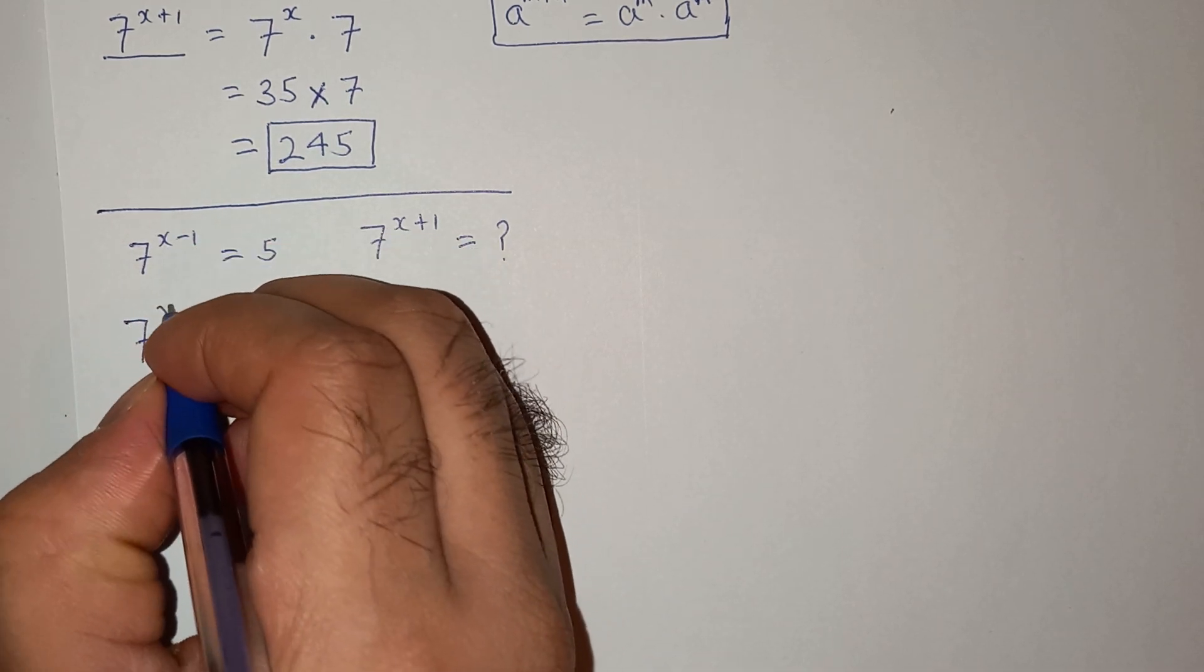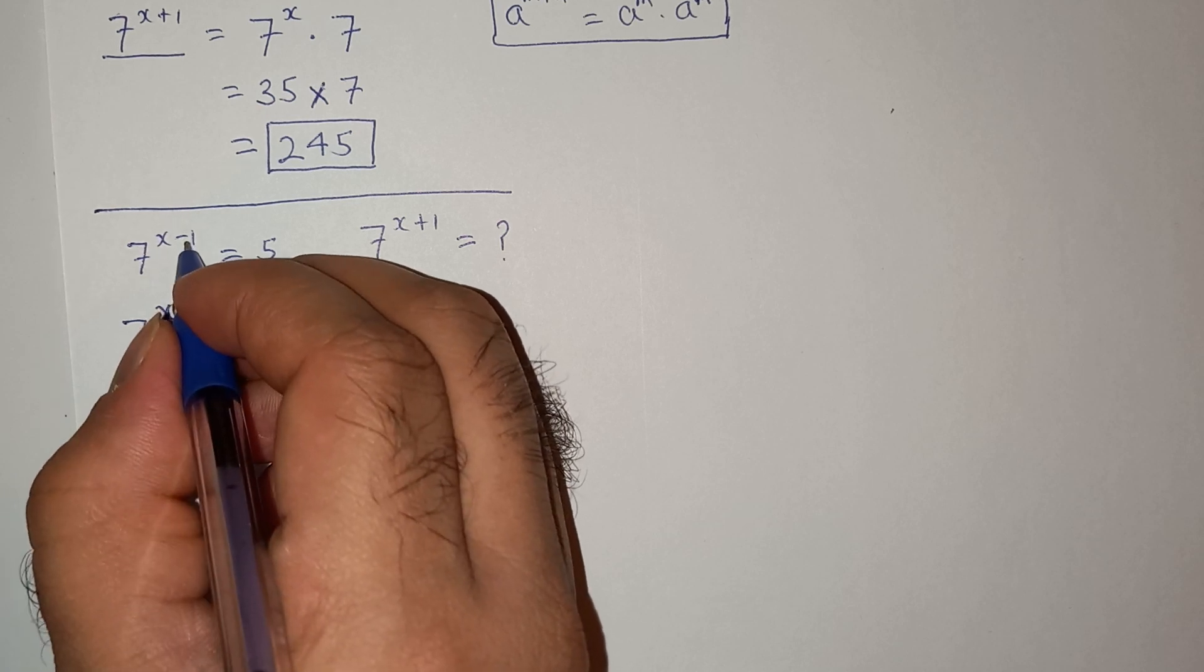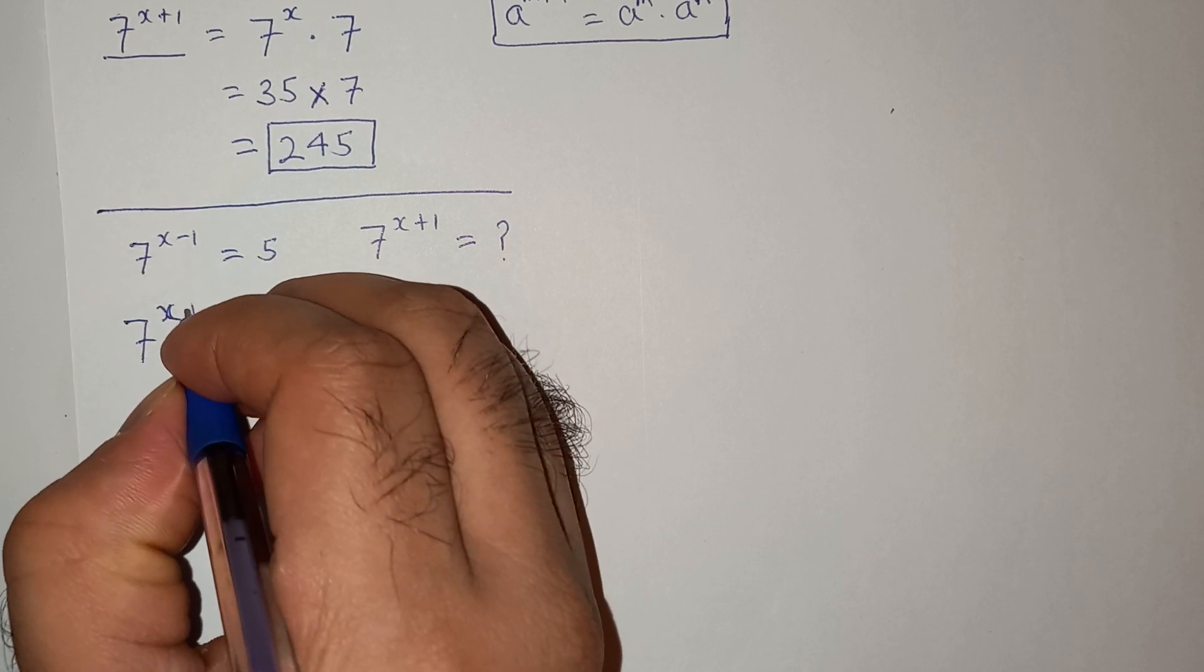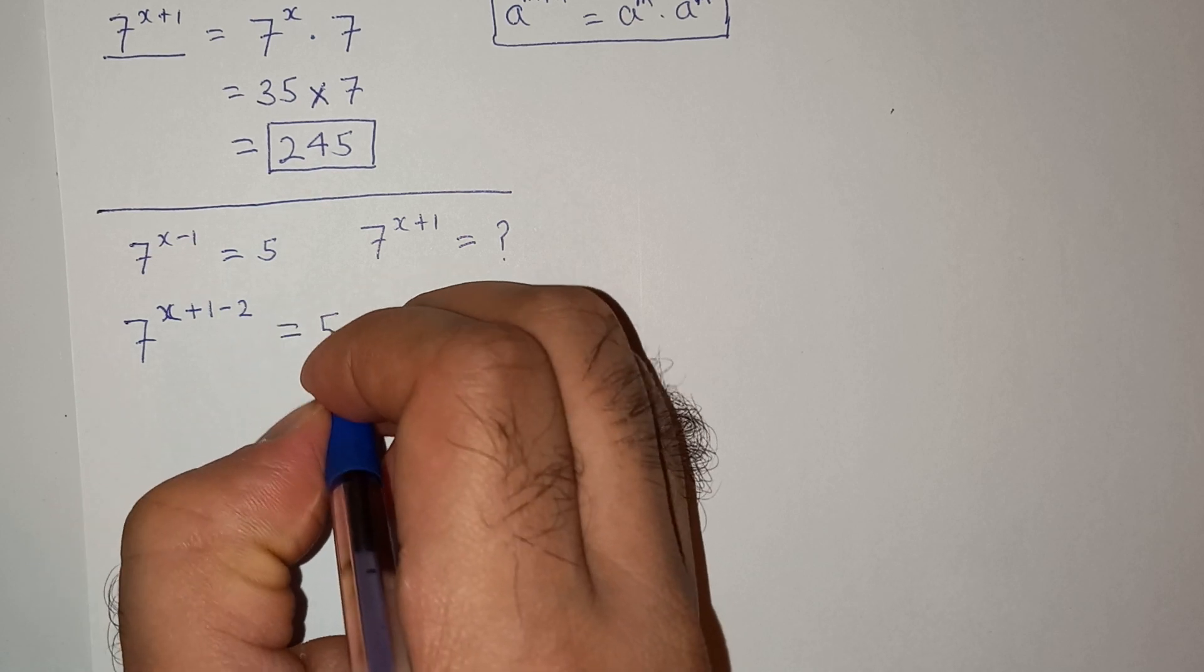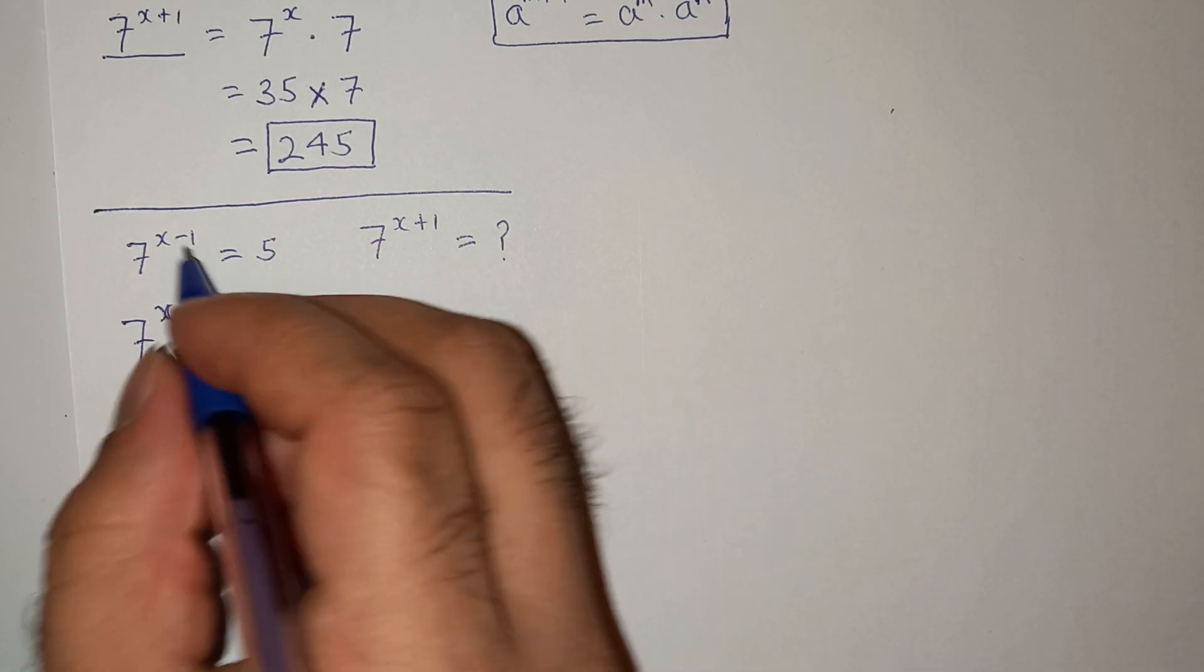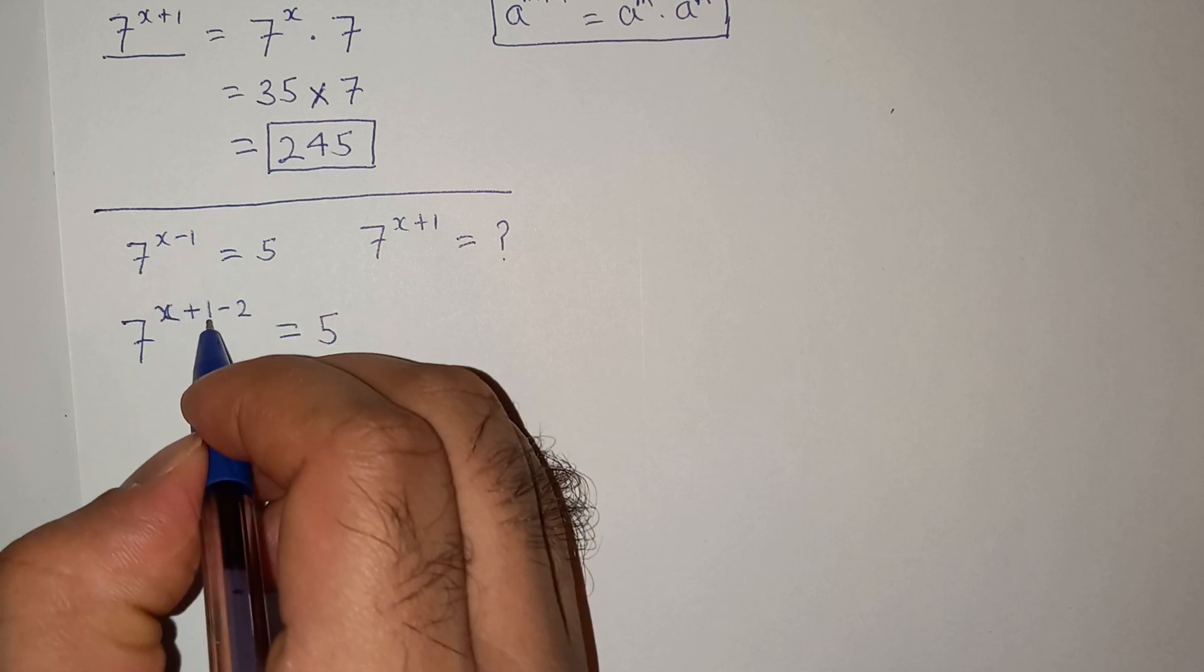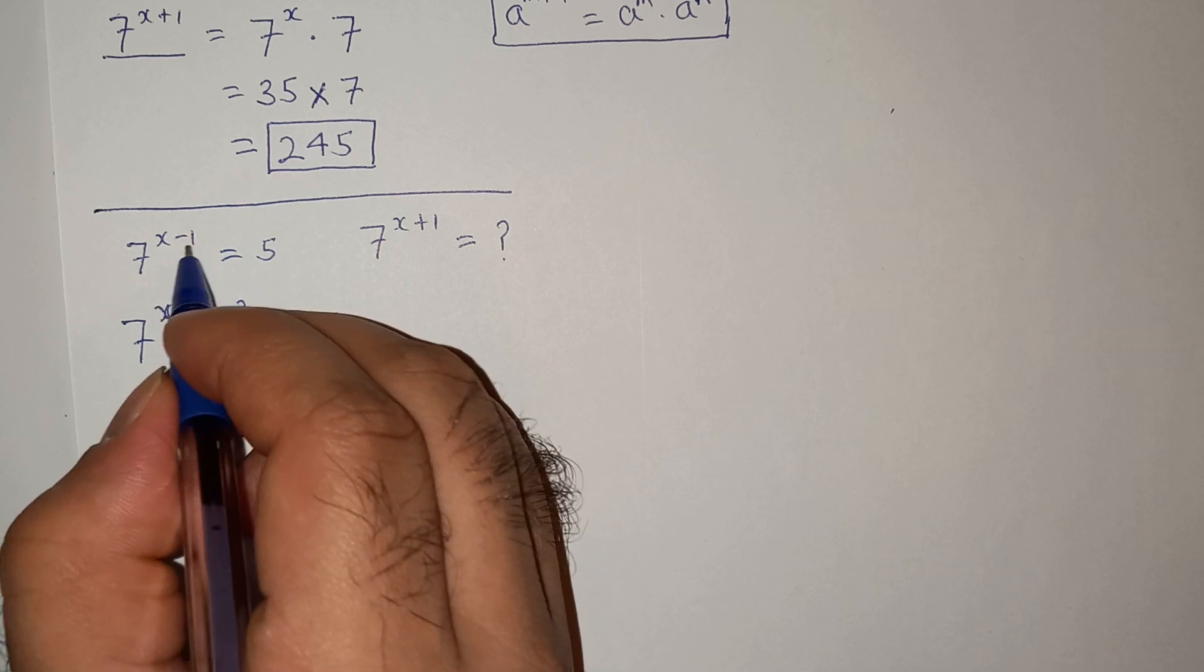All right, so this can be written as 7 power x and now minus 1 can be written as plus 1 plus 1 minus 2 equals to 5, right? Because I have written minus 1 as 1 minus 2 which is minus 1.